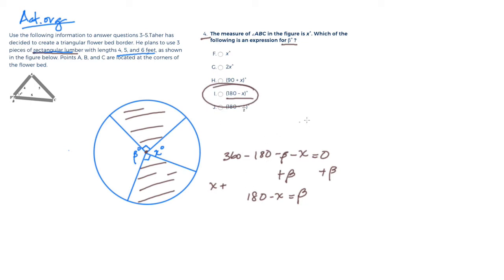You additionally could have done it the other direction, so you could have said X plus beta plus 180 is equal to 360. And then you can just solve for beta by subtracting 180 and subtracting X, so then you're left with 180 minus X, so answer choice I.